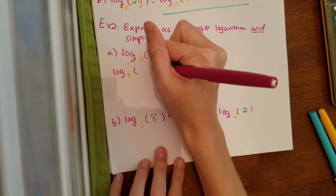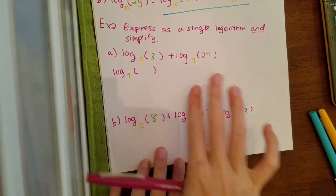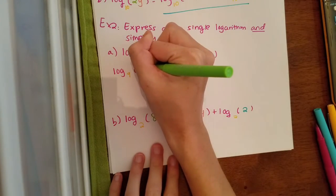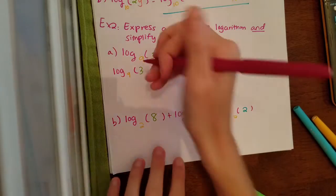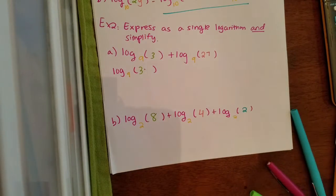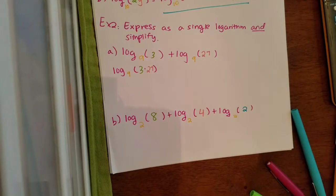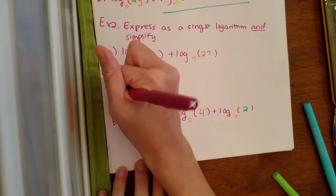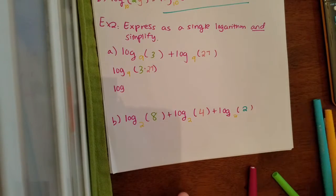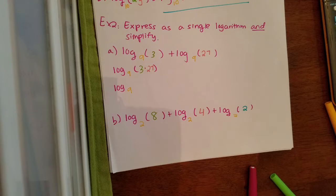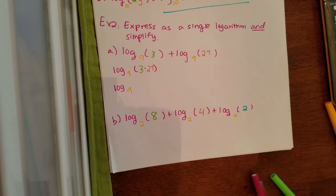Inside my parentheses, these two are going to come together through multiplication, so I'm going to have 3 times 27. Let's go ahead and simplify that: log base 9 of 3 times 27, which equals 81. So our 3 times 27 will be 81.